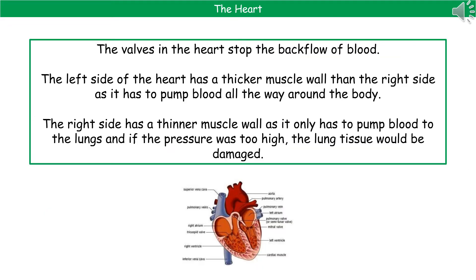Valves, whether in the veins or in the heart, function to stop the backflow of blood. The left side of the heart has a thicker muscle wall than the right side, because the left side pumps blood all the way around the body and needs a higher pressure. The right side has a thinner muscle wall as it only pumps blood to the lungs — and if the pressure was too high, we'd damage the lung tissue.